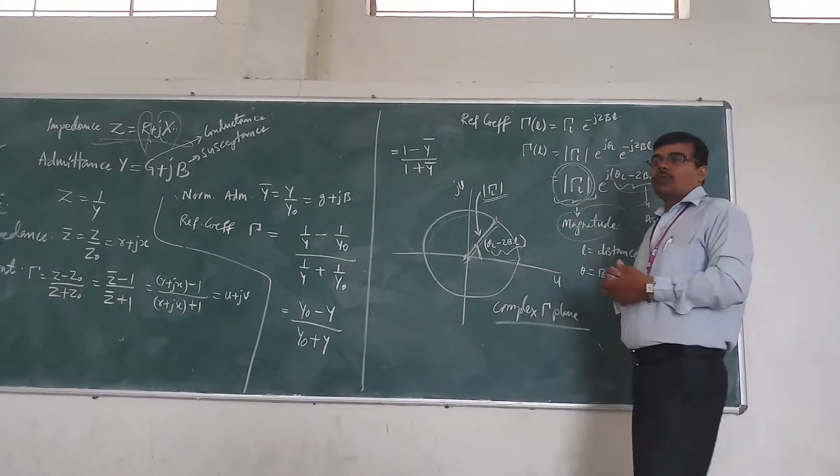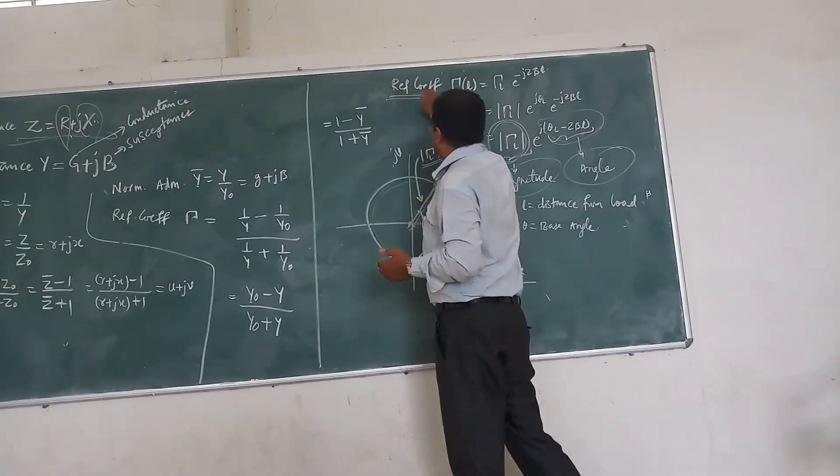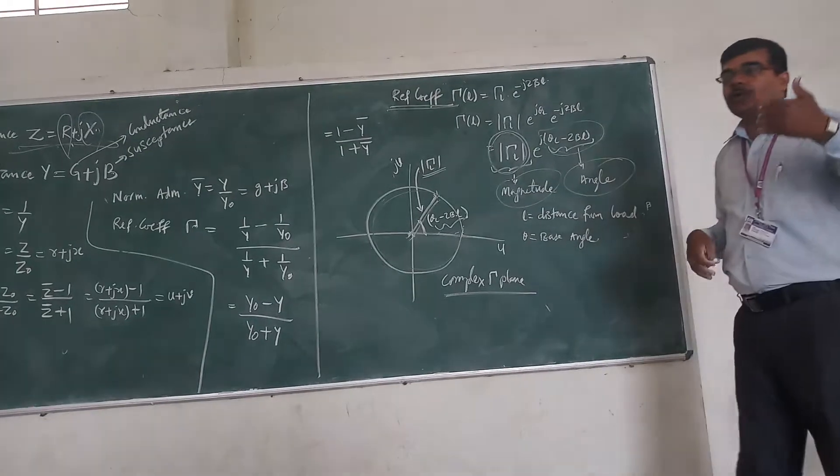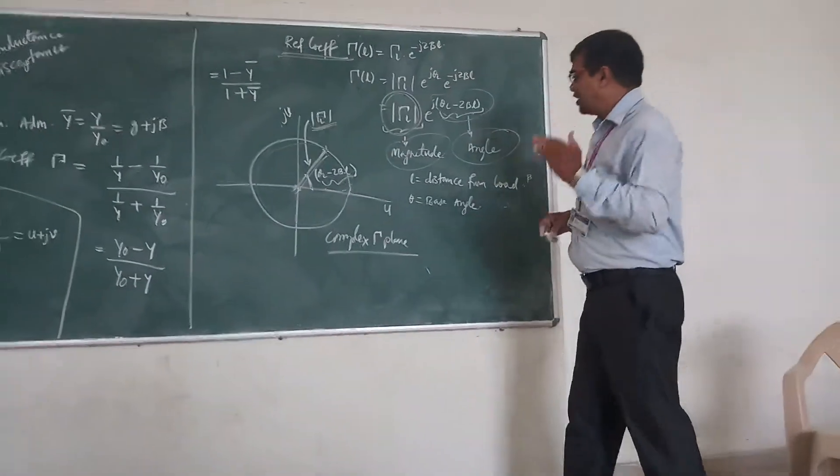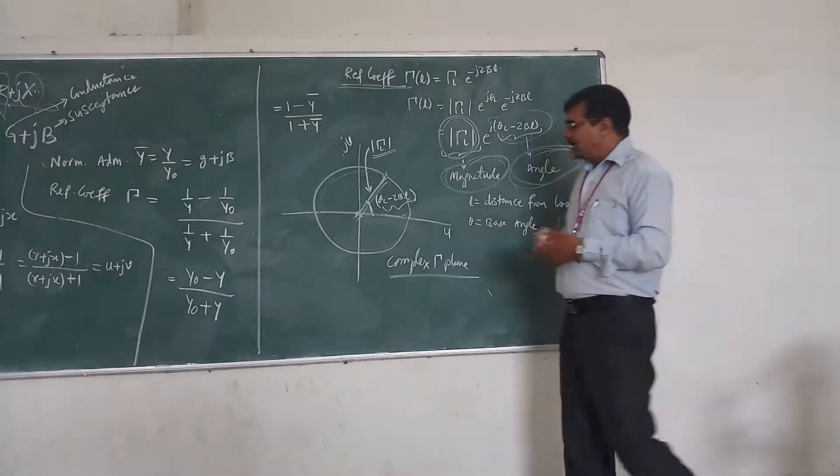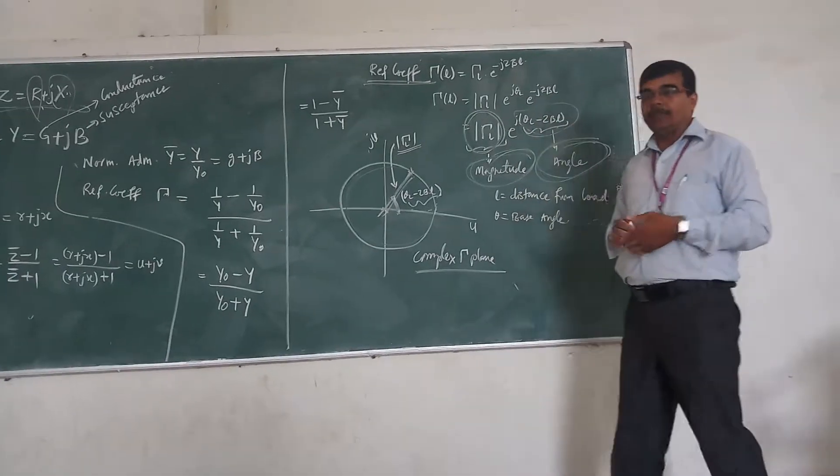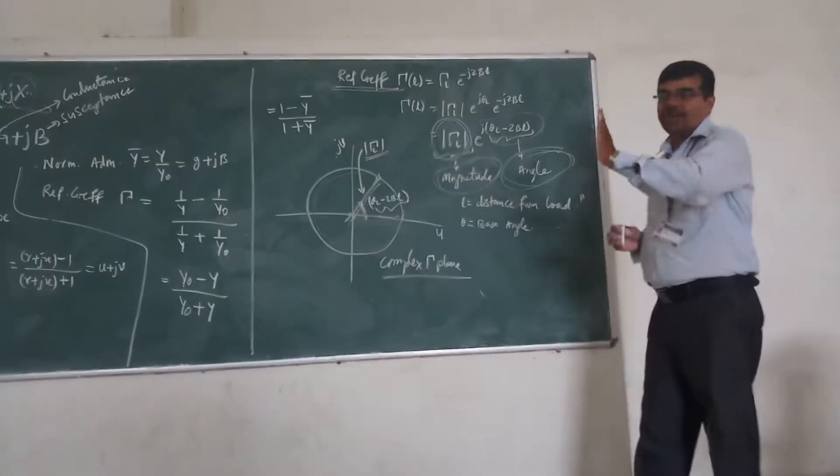And the angle at this position, this will be the required angle. If somebody asks about the components of the reflection coefficient, it consists of the magnitude component and the angle component. This will be the magnitude and this is the required angle in the Smith chart.